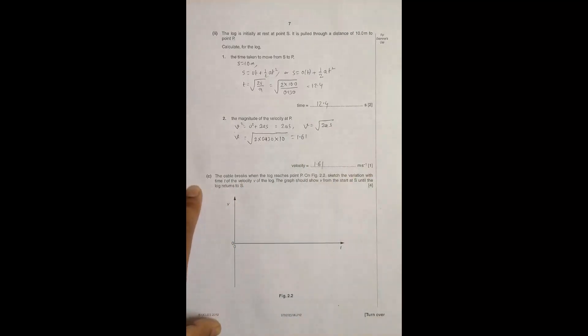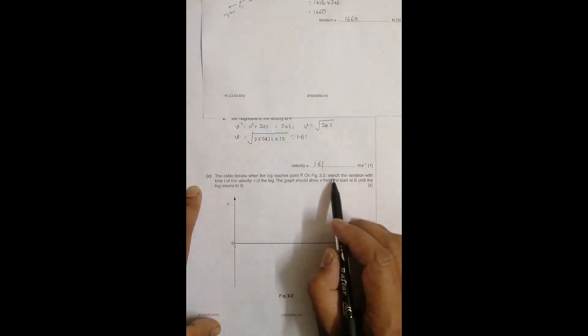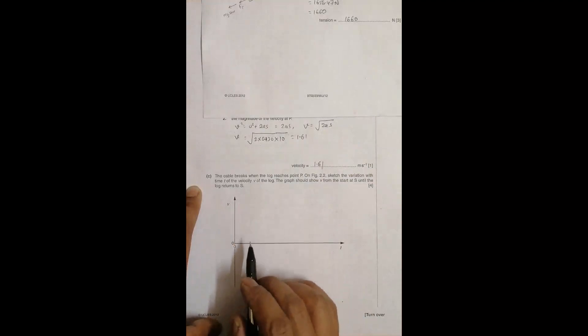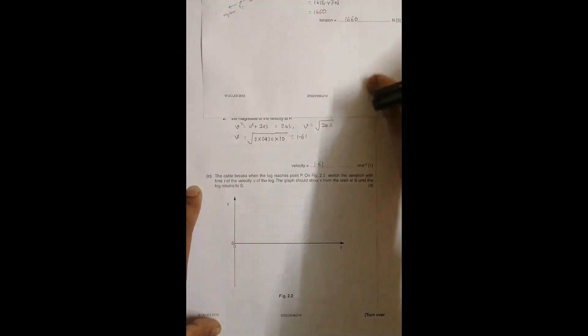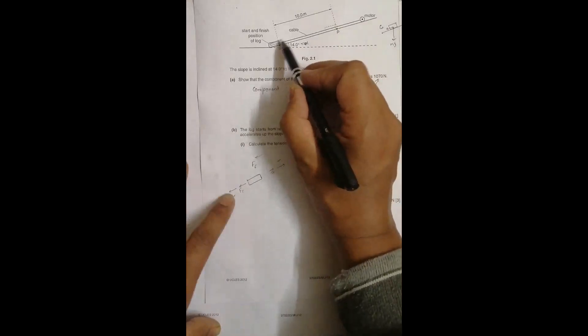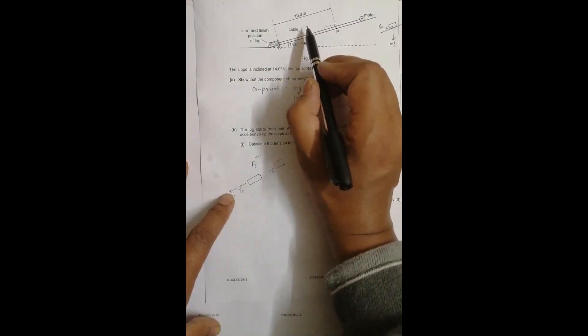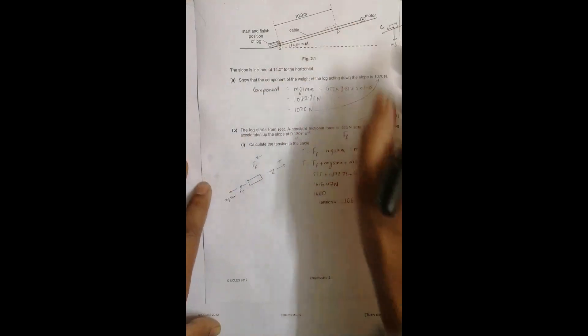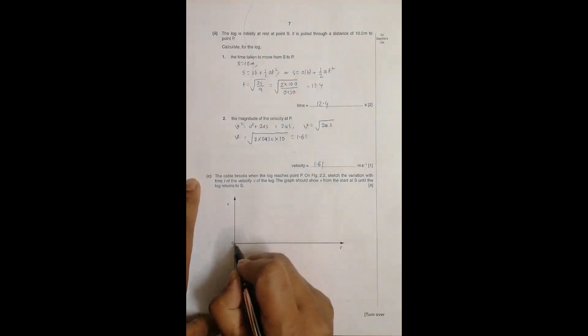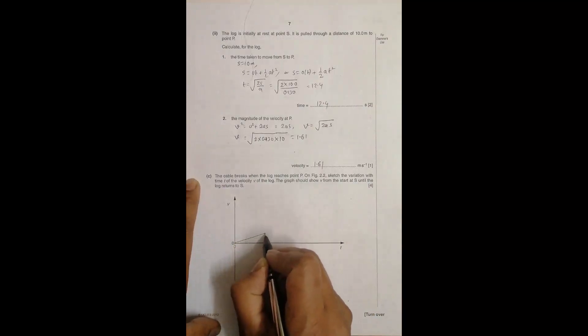The major part which was asked of me: the cable breaks when the log reaches point P. On figure 2.2, sketch the variation with time t of the velocity v of the log from the start at S until it reaches S again. From here to here it was under acceleration, so velocity should increase uniformly like this, a straight line through the origin.